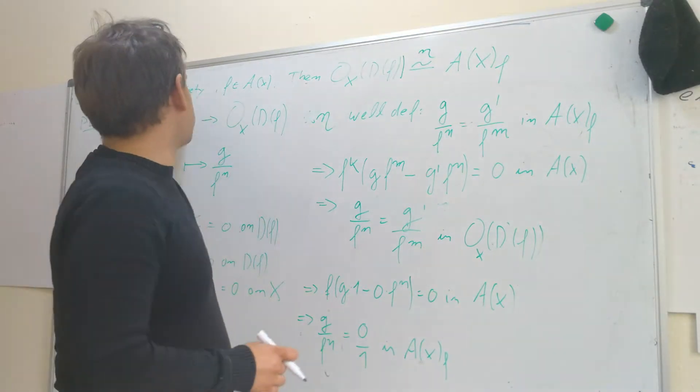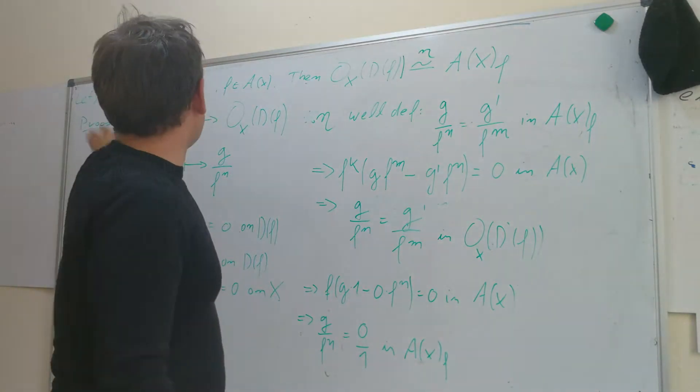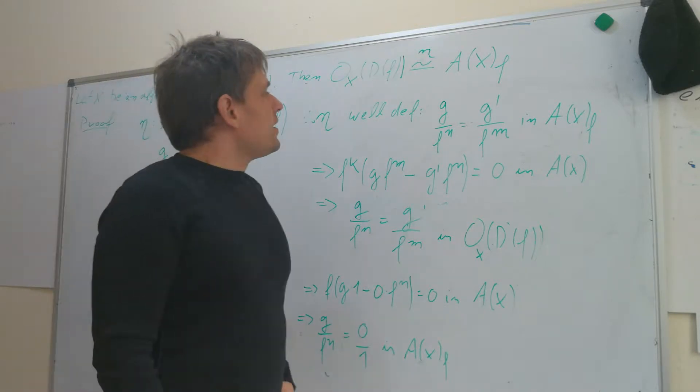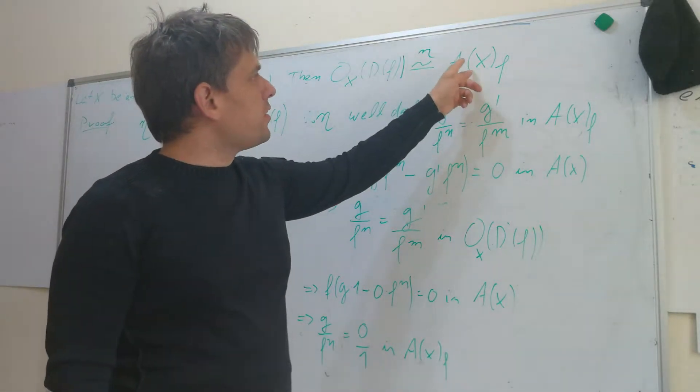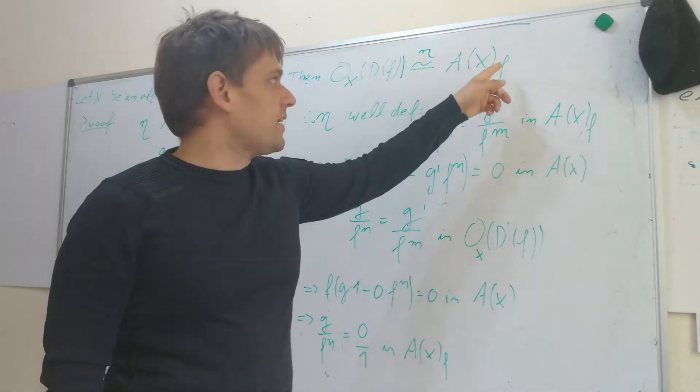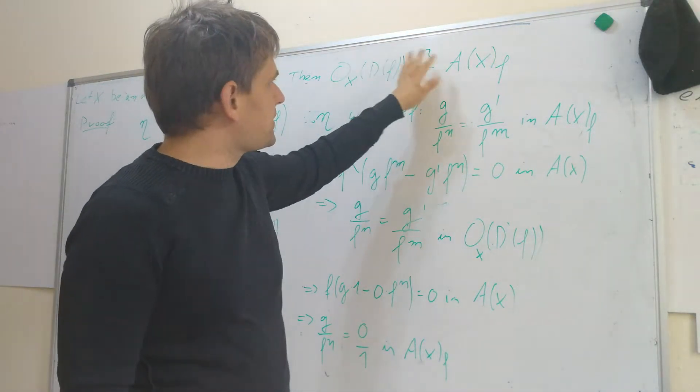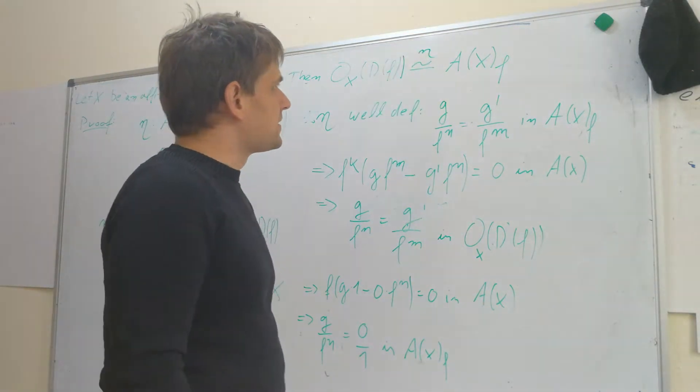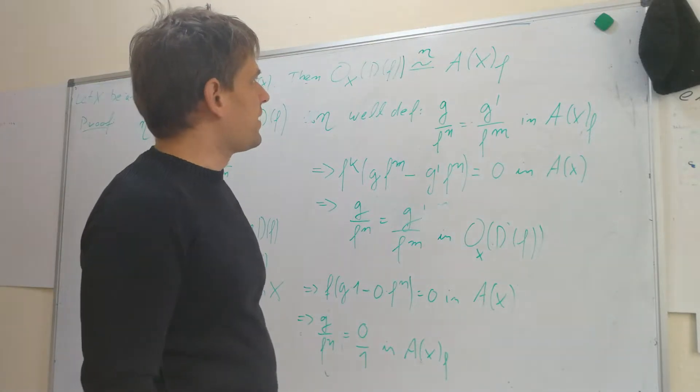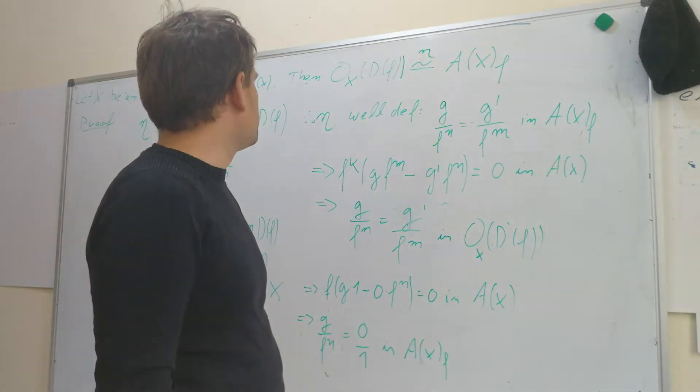Of course, x is, as always, our affine variety. And the coordinate ring Ax localized at f. So this is the isomorphism of k-algebras that we are going to prove.